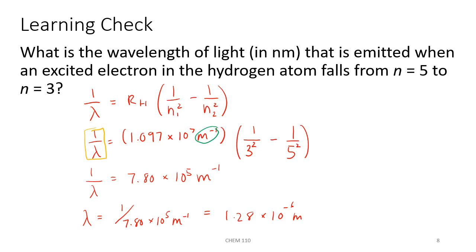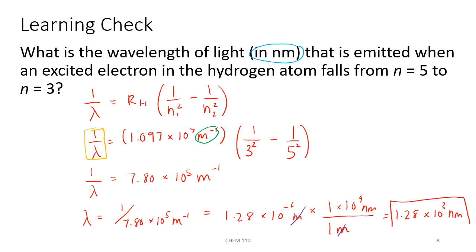Converting to nanometers: 1.28 × 10⁻⁶ meters × (10⁹ nanometers per meter) = 1.28 × 10³ nanometers. This transition is not in the visible spectrum, because the visible spectrum ranges from about 400 nanometers on the violet end up to 700 nanometers on the red end. So we're outside of that visible spectrum portion. Transitions where an electron falls to n equals 2 normally correspond to wavelengths we can see in the visible region.